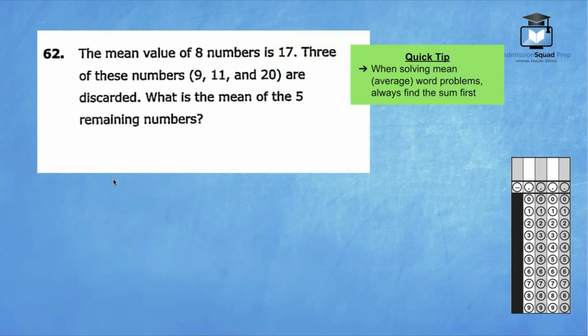This question is testing your understanding of mean or average word problems. Keep in mind when solving mean or average word problems, you always want to find the sum first. That is a little hint that comes up in handy when you're taking the SHSAT. Let's read question number 62. The mean value of eight numbers is 17. Three of these numbers, 9, 11, and 20 are discarded. That means we're going to get rid of those numbers. What is the mean of the remaining five numbers?